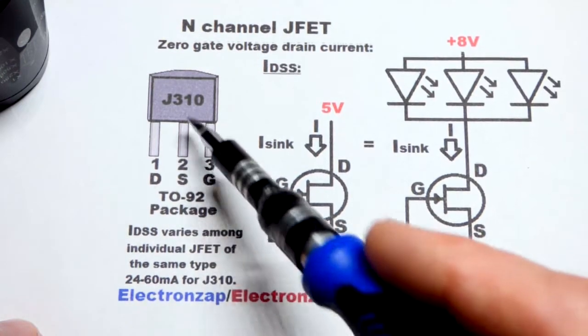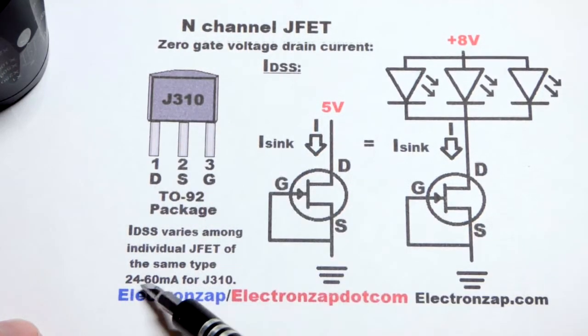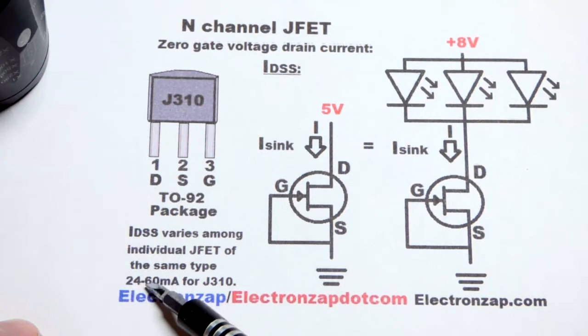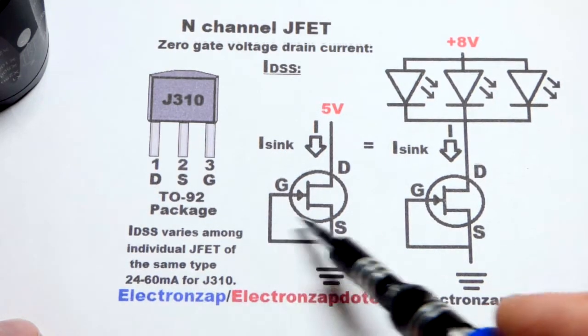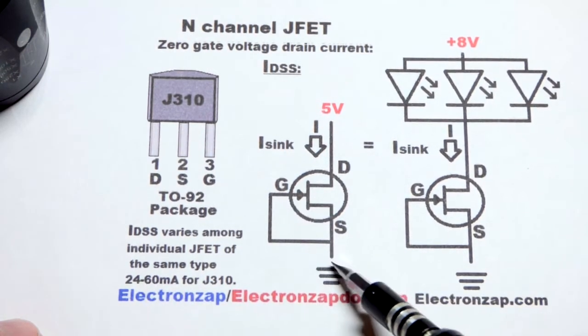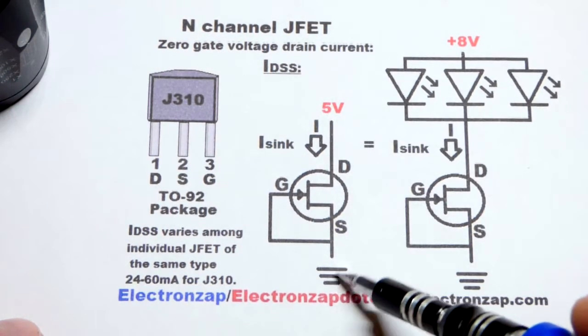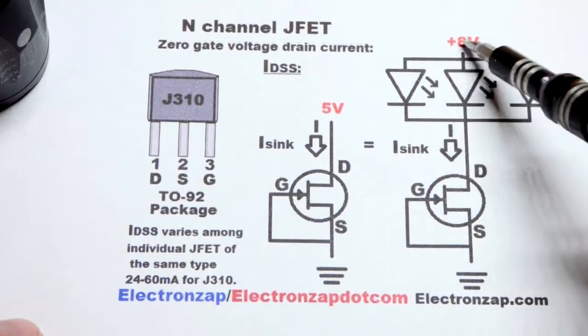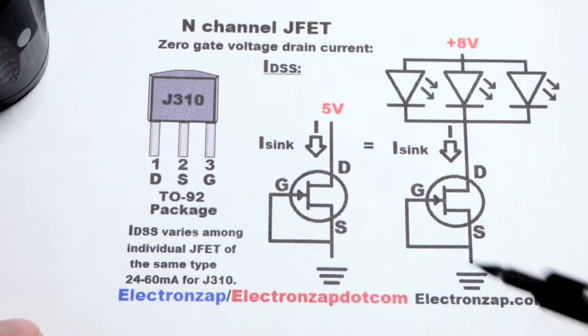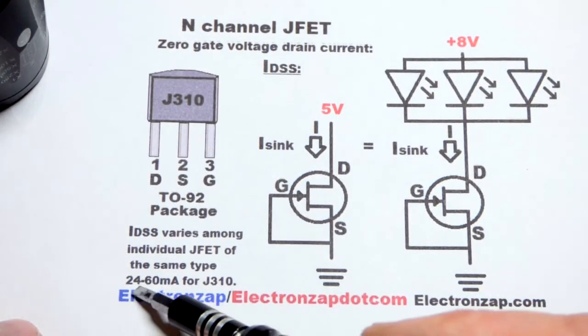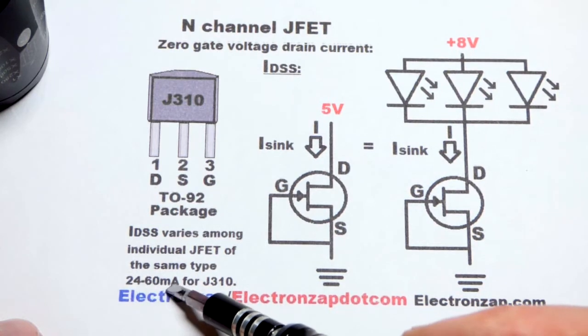So for the J310, you can expect somewhere around about 24 to 60 milliamps of current when you tie the gate directly to ground. About zero volts right here. So we got five volts higher than zero volts. And this one, we got eight volts higher than zero volts right there. And so we can expect somewhere about 24 to 60 milliamps.